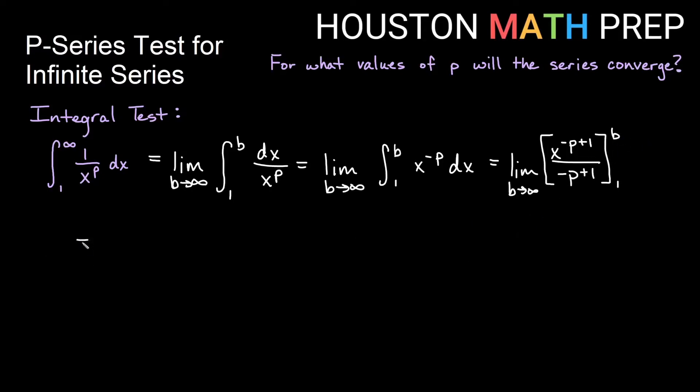I want to rewrite this slightly. This will be the limit as b approaches infinity - I'm just going to rearrange to x to the 1 minus p over 1 minus p. Everything is still the same, I just rearranged the order of terms. Now if I put in my bounds, the first term will be limit as b approaches infinity of b to the 1 minus p over 1 minus p, and then minus - if I plug in 1, 1 to the 1 minus p, 1 to any power is just 1, and then I'll have 1 minus p on the bottom.